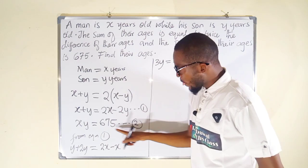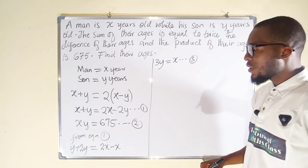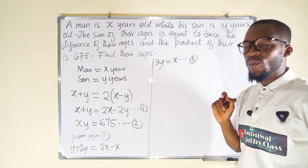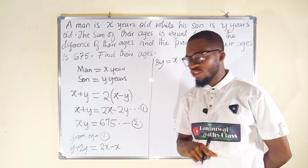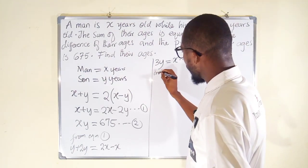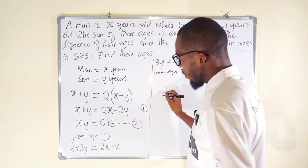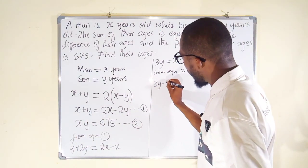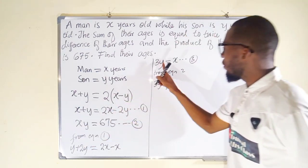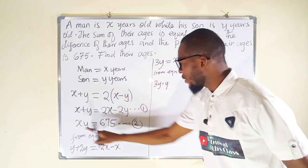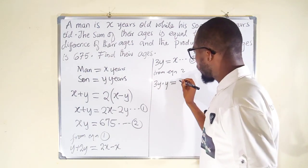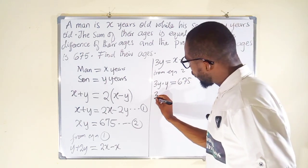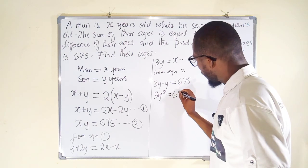From Equation 2 we know that xy = 675. We can substitute the value of x from Equation 3, replacing x with 3y. So instead of writing xy, we write 3y multiplied by y, which gives us 3y² = 675.